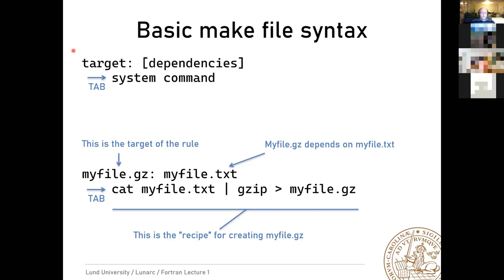Make has the notion of a target — the goal you want to achieve. You specify a target name, a colon, and optionally dependencies that this target requires before it can be built. On the next line (indented with a tab, not spaces) is the recipe for achieving the target — a command line that achieves this goal. Importantly, that indented line must use an actual tab character.